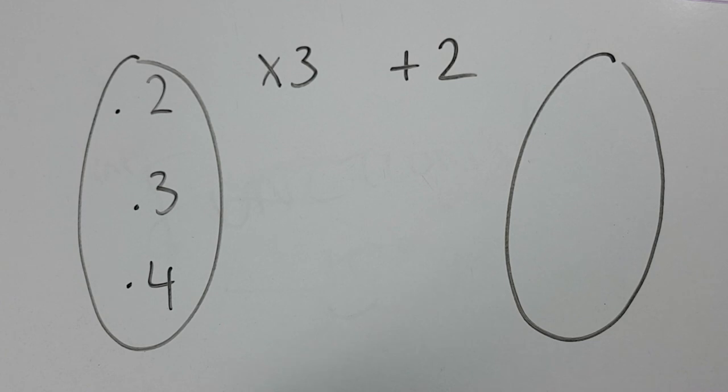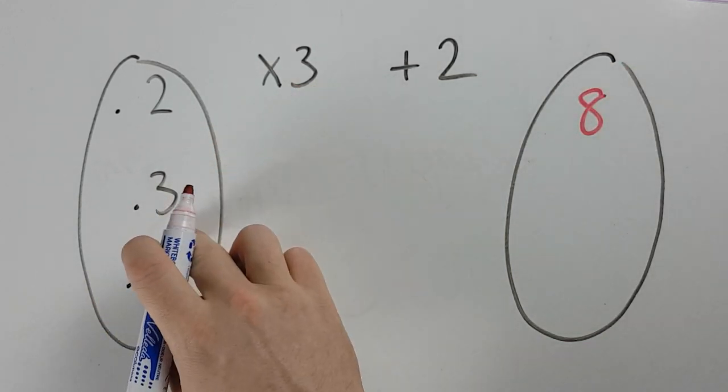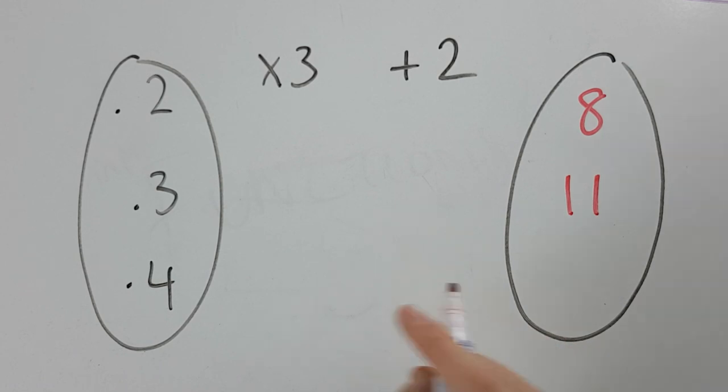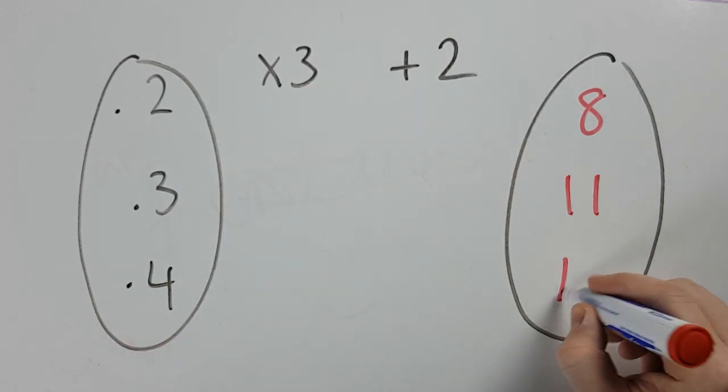So if you picked the number 2, multiply it by 3, you get 6, and then add 2, you would have gotten 8. If you picked 3, you'd say 3 by 3 is 9, plus 2, you would have gotten 11. And if you said 4 by 3, that's 12, 12 plus 2 is 14.